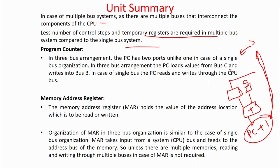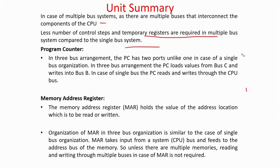In a three-bus system we assume two buses take operands from registers and one bus writes results back to registers. In this system, registers have multiple ports — multiple output ports so a register can give output to two or three parallel buses simultaneously, and one input port. This is necessary because if you have only one gateway, having multiple buses gives no advantage. So in a multiple bus system, registers have multiple output ports.